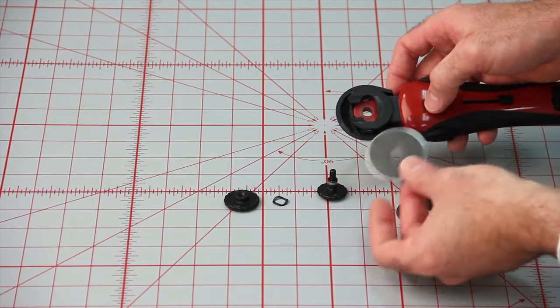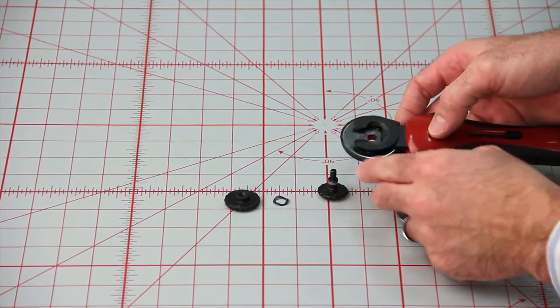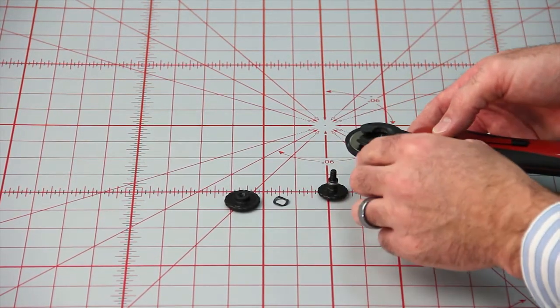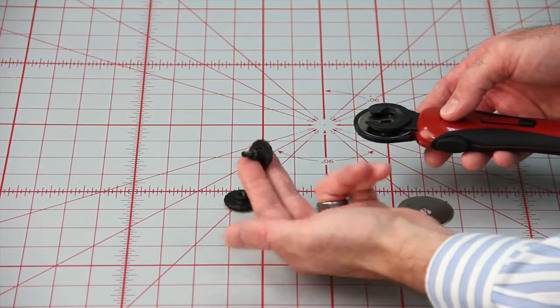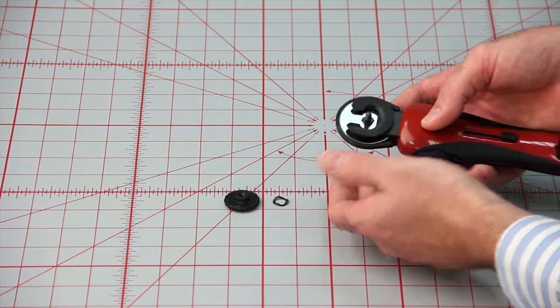Go ahead and take your new blade and we're just going to slide that back into place. If you look at that, we have a hole. We're just going to slide it back into place, take the bolt, and we're going to push that back up through the bottom.